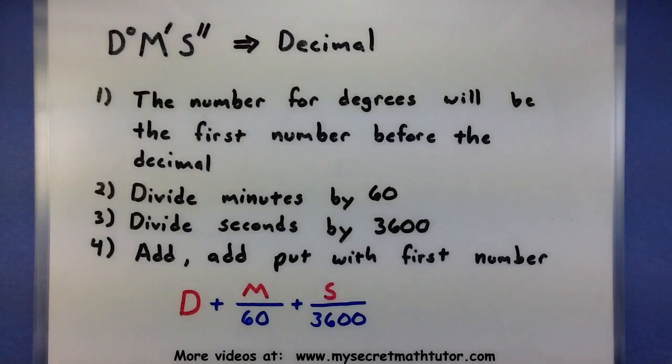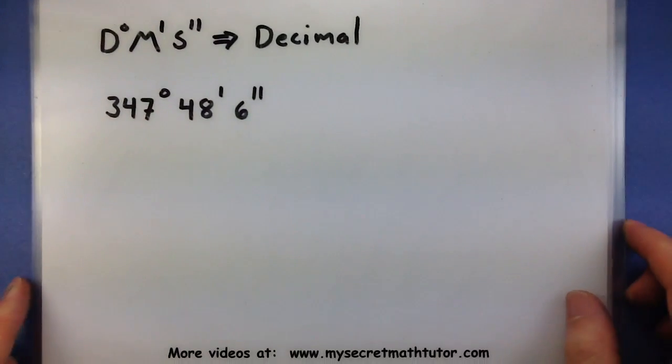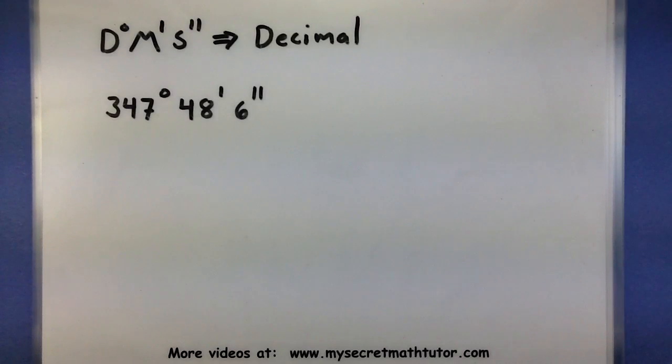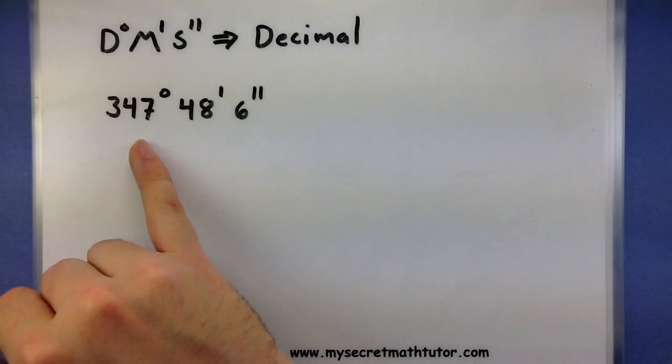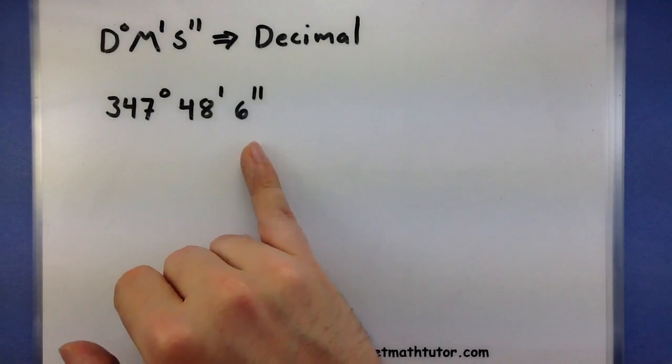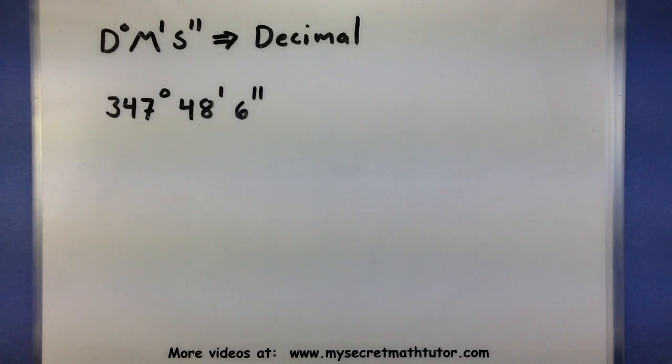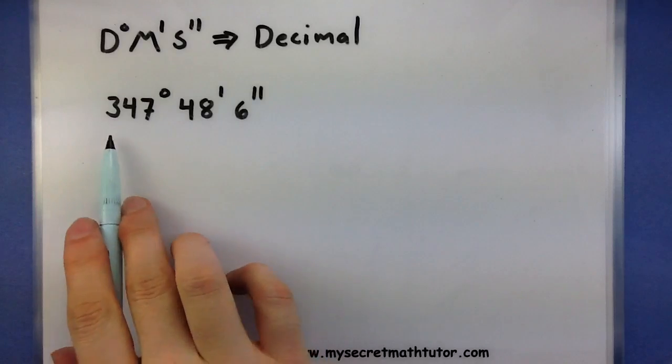Let's take all of these steps and put them into practice. So here I have an angle, 347 degrees, 48 minutes, and 6 seconds, and I want to see what its decimal equivalent is.